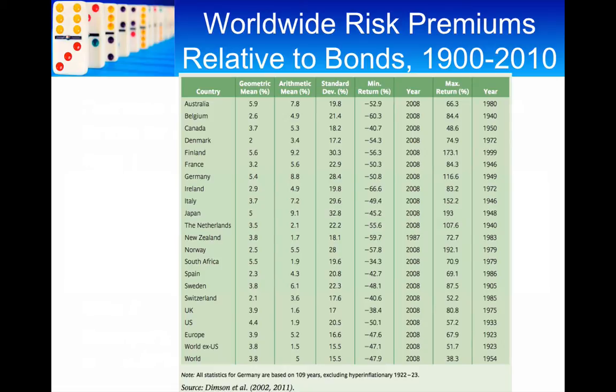So, the geometric mean has incorporated a lot more losses and the compounding effect of those losses. And that's why it's smaller compared to the arithmetic mean, where you're not including any compounding.